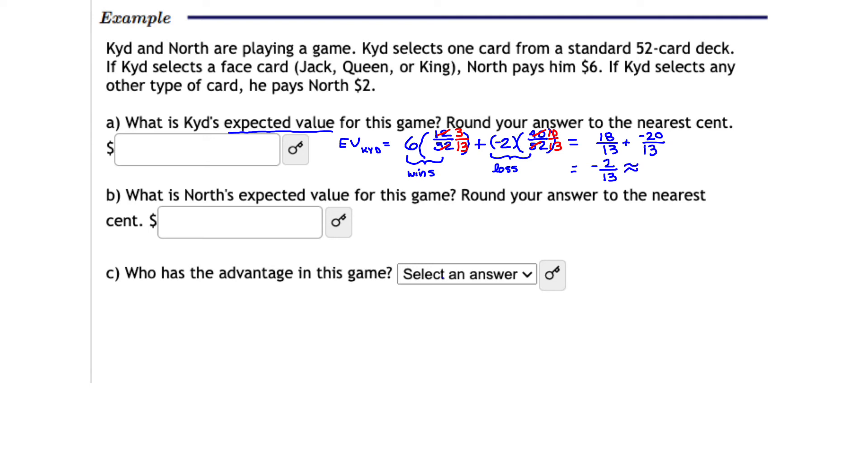That converts to the following decimal. And that decimal is approximately 0.15384 or 385. But I can stop right here because all I need to do is round to the nearest cent, which means two decimal places. So that means that's going to be approximately 0.15 cents, which is 15 cents. So that would be Kid's expected value for this game.